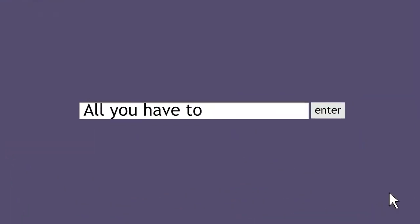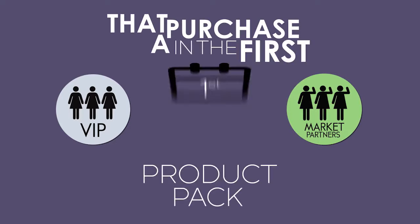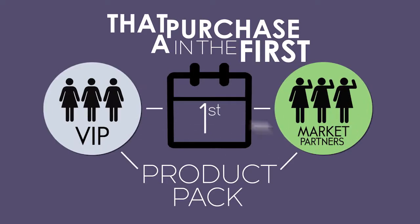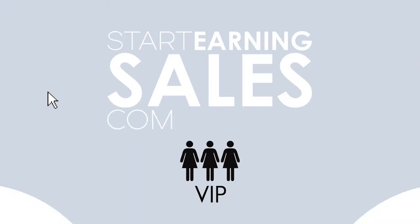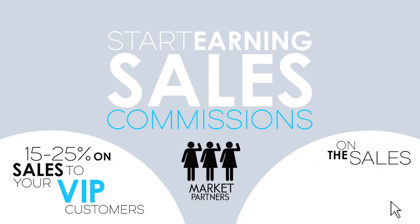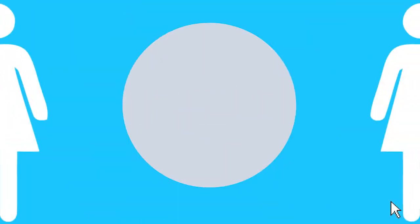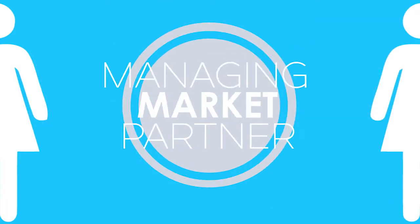She learns that all you have to do is sign up 3 VIP customers and 3 market partners that purchase a product pack in the first month. 3 and 3. You'll instantly start earning sales commissions of 15 to 25% on sales to your VIP customers, as well as commission on the sales of the other market partners you sign up. When you do this, you earn $300 in fast start bonuses and you get promoted to managing market partner.